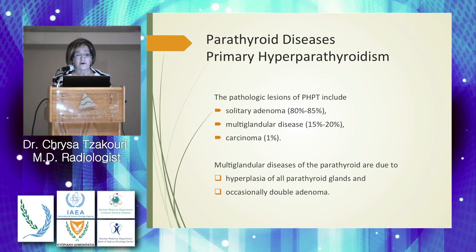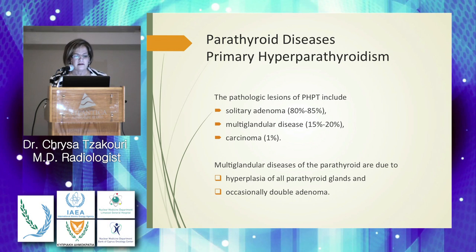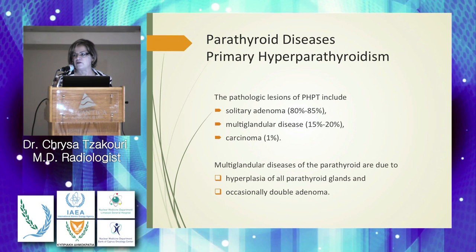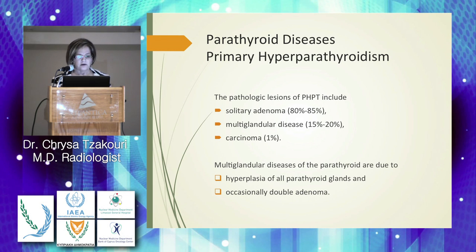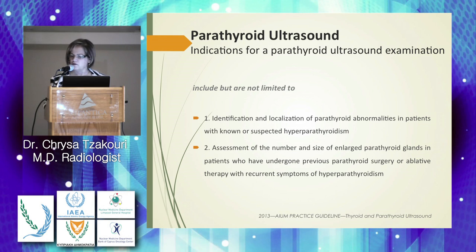Pathological lesions of the parathyroid include: a solitary adenoma in most cases — up to 80-85% — multinodular disease in 15-20%, and carcinoma in approximately 1-2%. Multinodular parathyroid disease is due to hyperplasia of all parathyroid glands, or occasionally double adenoma. In some cases, three adenomas are found, which is included under primary hyperplasia.